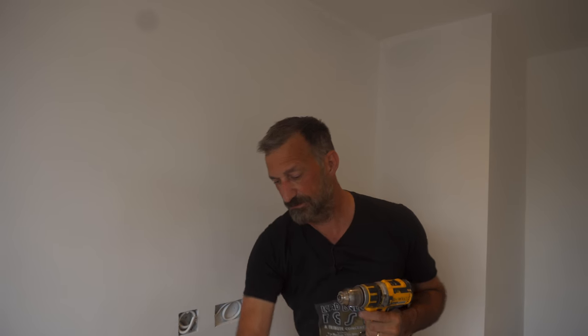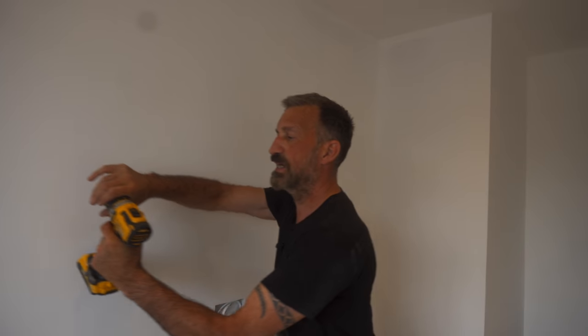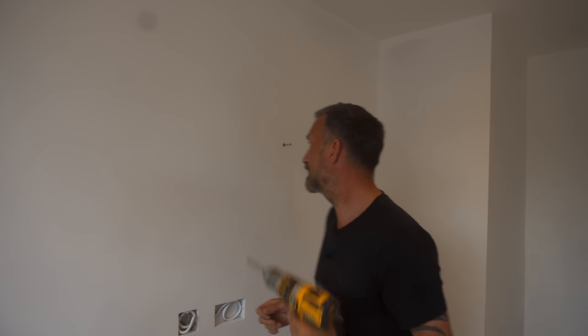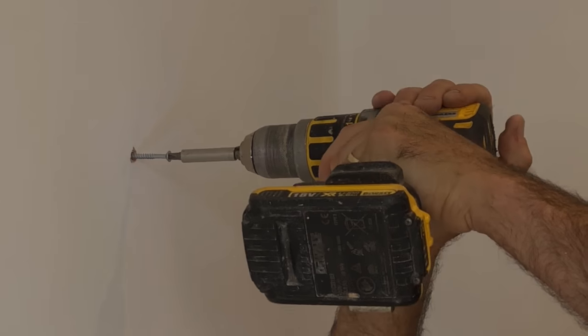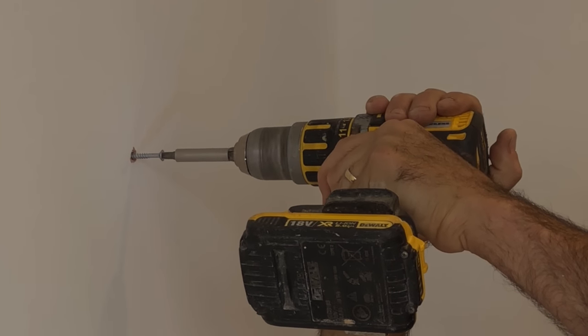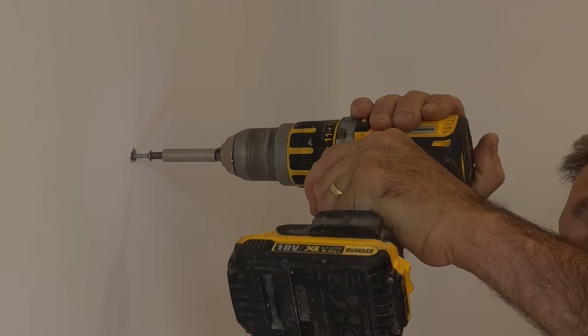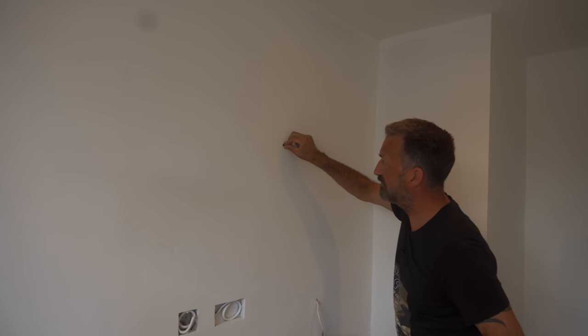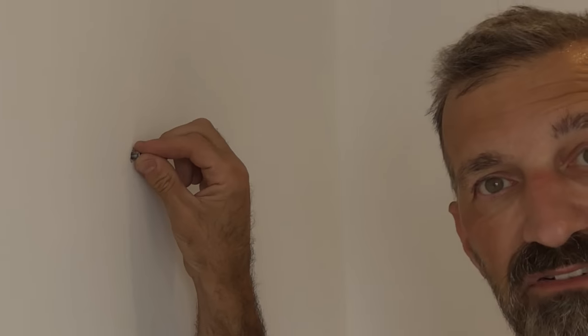So once you've done that, let's remove this, let's go back onto screw, back onto number one screw. Put our screw bit in, and then we are going to go very slowly, apply the pressure until we are about 5mm, just under a quarter of an inch, away from the wall.